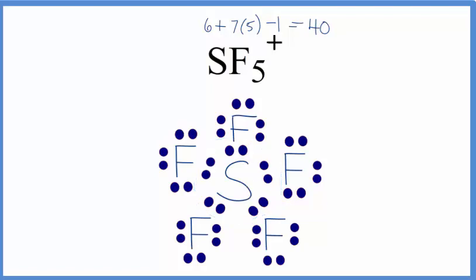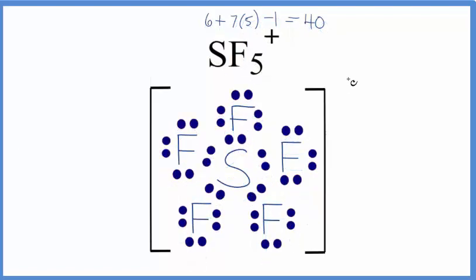Often we'll see brackets placed around the structure, and then a positive sign out here. We'll also see these bonds between atoms replaced with lines to make it a little bit neater. Let's do that. So that's the Lewis structure for the SF5 plus ion.